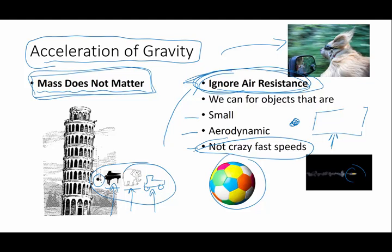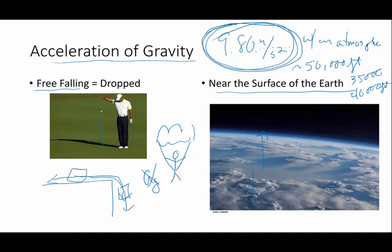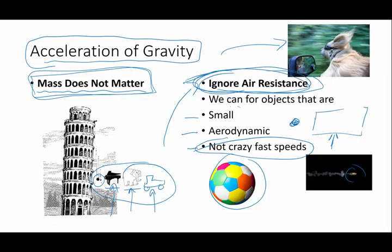So as long as we are talking about things that are close to the surface of the Earth, we just drop them, they are relatively small and aerodynamic, then their mass doesn't matter and they will accelerate downward at 9.80 meters per second squared.